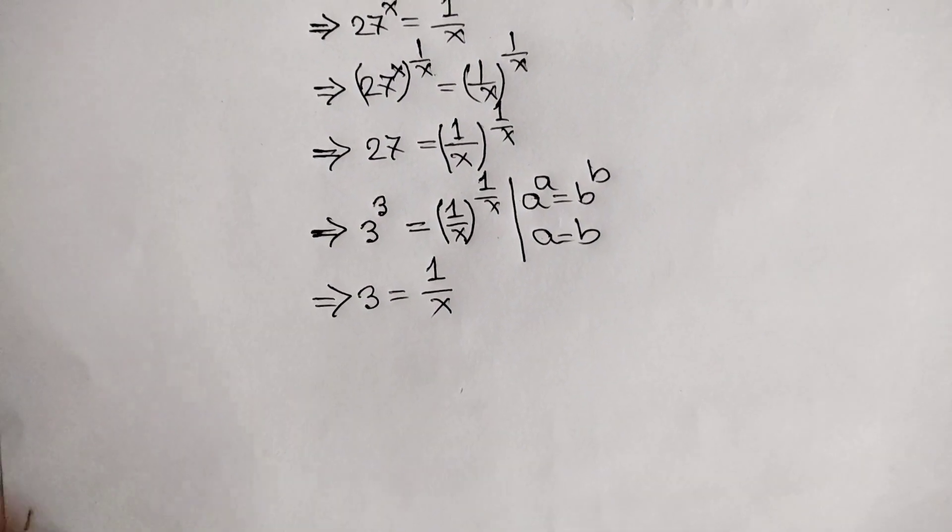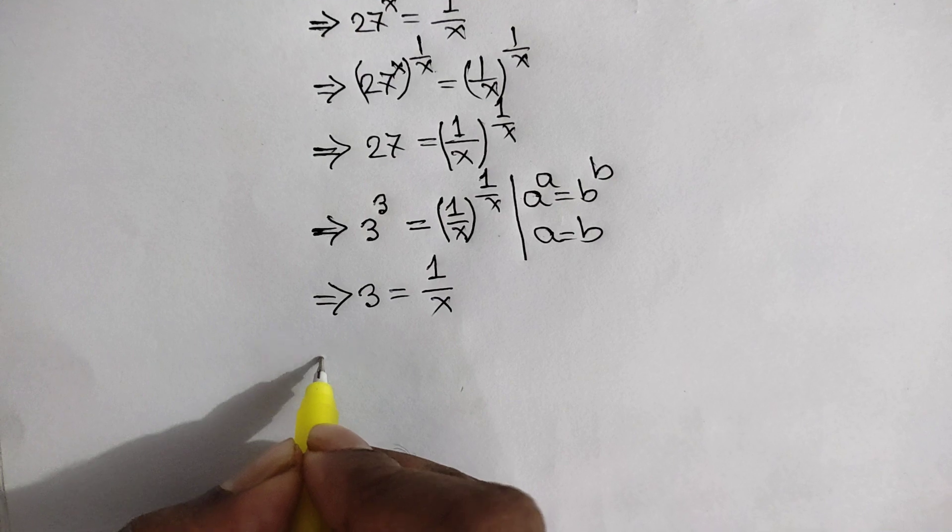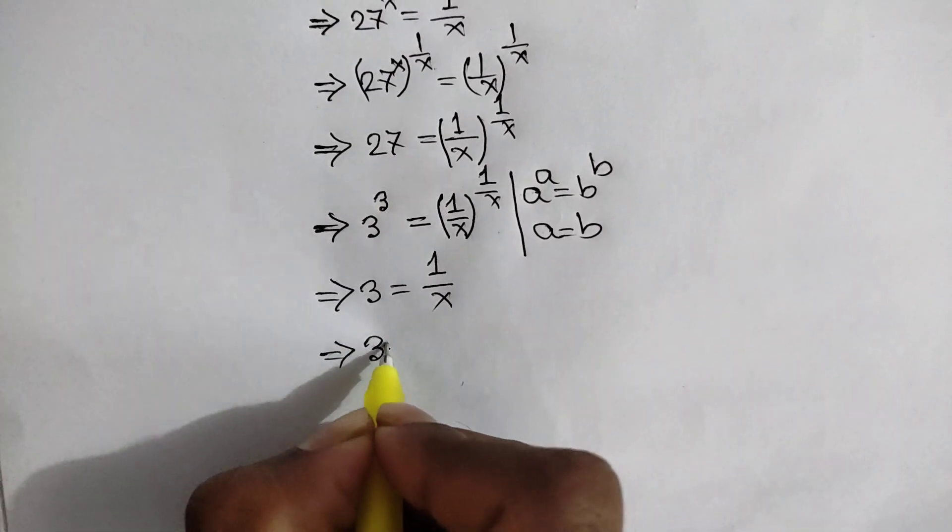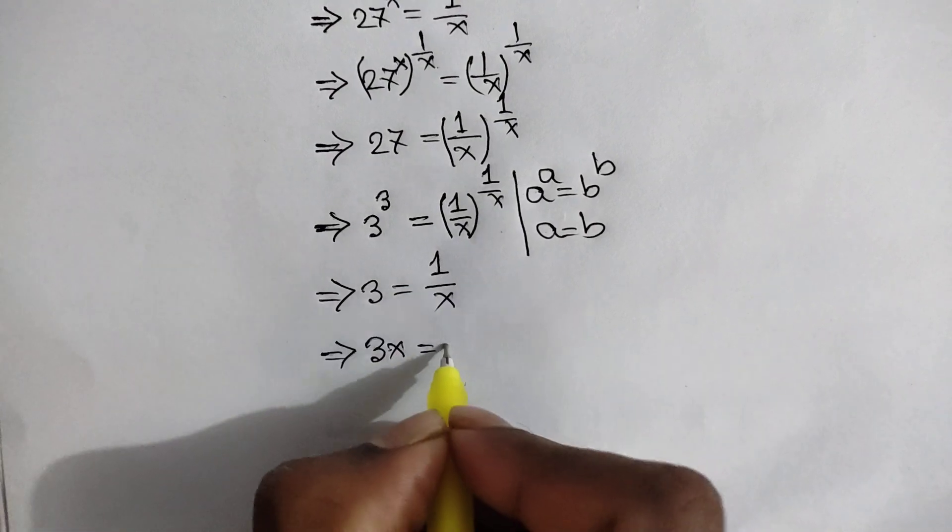Now, multiplying both sides by x, we will have 3 times x is equal to 3x is equal to 1.